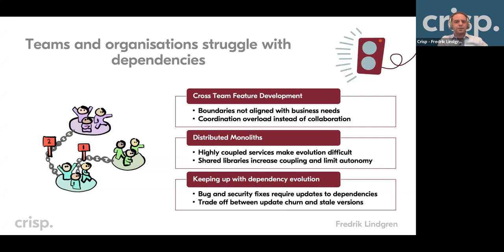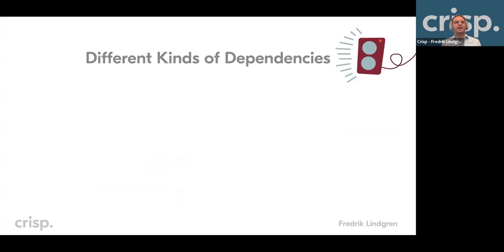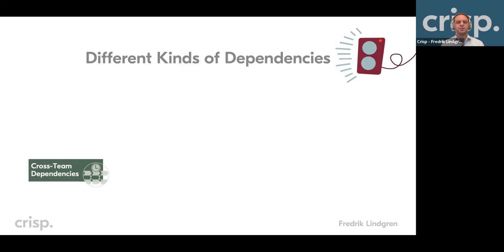So those are some of the dependency problems. To be deliberate about how to deal with them, we're going to look at some categorization of dependencies. One kind is the organizational dependency — the cross-team dependency. One way of recognizing it is that it's a dependency that typically causes your plan to fail.